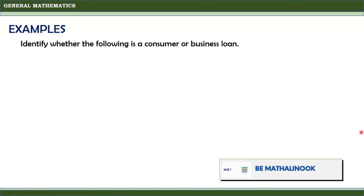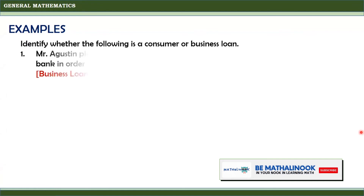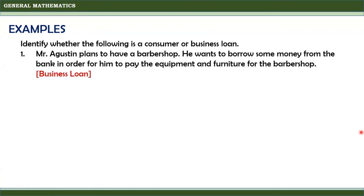Identify whether the following is a consumer or business loan. Mr. Agustin plans to have a barbershop. He wants to borrow some money from the bank in order to pay for the equipment and furniture for the barbershop. This is an example of a business loan because Mr. Agustin plans to have a barbershop, which will be his business.